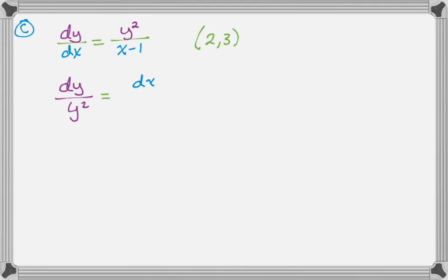So these problems, if you don't separate, you always get zero points, basically. So we separate, we get everything with a y on one side, everything with an x on one side. I'm going to integrate both of those.